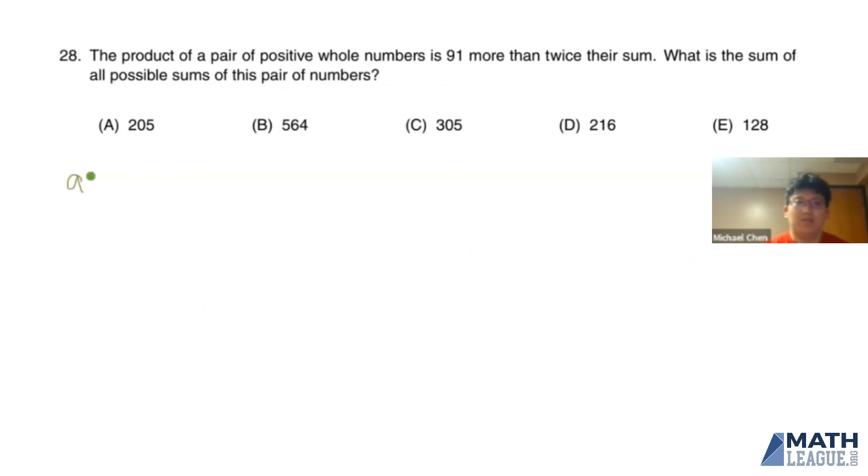So let's say that we have the two numbers A and B. Then this first sentence tells us that AB is equal to 91 plus two times the quantity A plus B. Now what we can do is we can distribute this two and move all the variables to the left-hand side. That gives us AB minus 2A minus 2B equals 91.